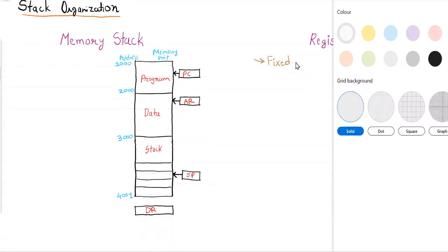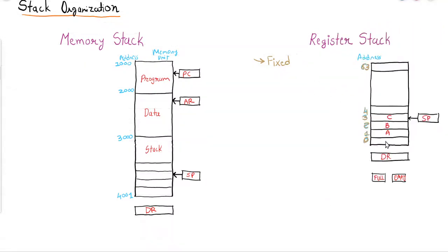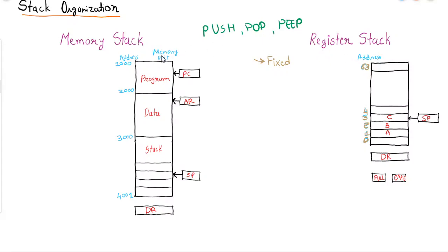The elements of the register stack include the data register (DR). Whatever data we want to store into the stack or retrieve from the stack will be handled using the data register. There are two operations with the stack: push for storing data, pop for removing data, and peek — where we look at the top of the stack and retrieve the top element.